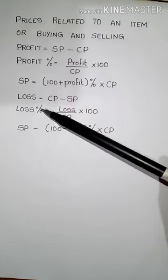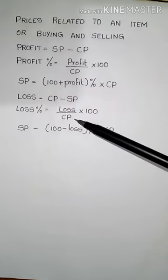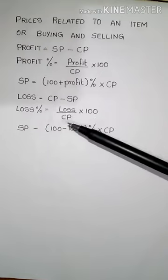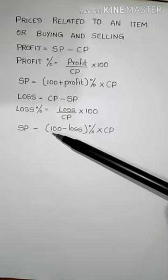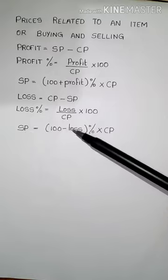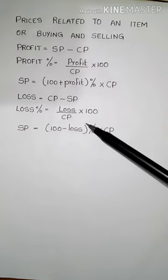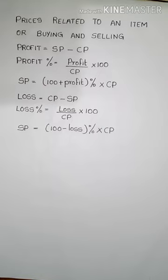Loss percentage is equal to loss by cost price into 100. Now let us see how to find selling price when there is a loss. Selling price is equal to 100 minus loss percentage, into cost price divided by 100. This formula is the same as that of decrease percentage, because loss is considered to be a decreased quantity.